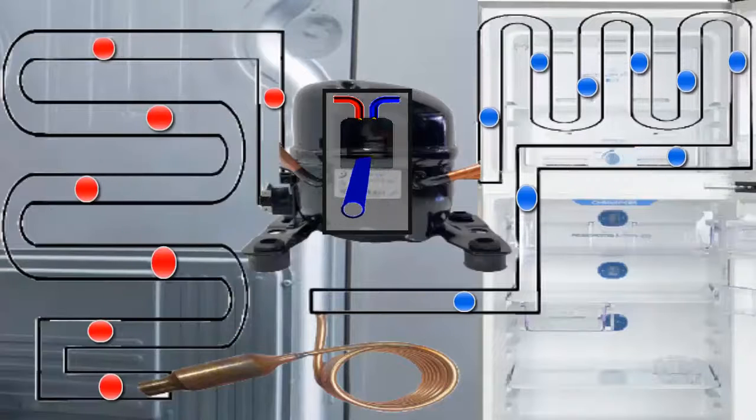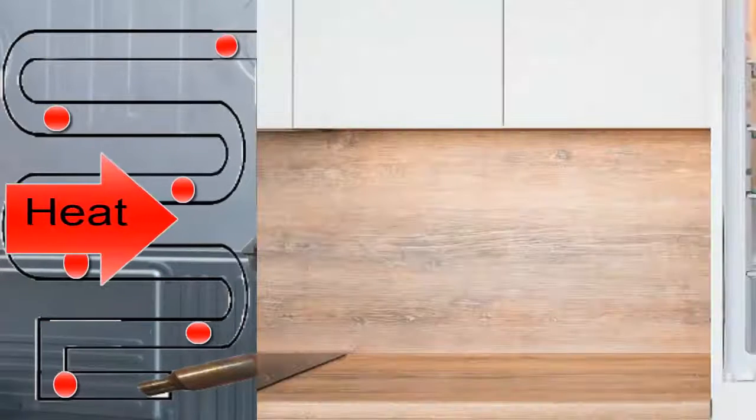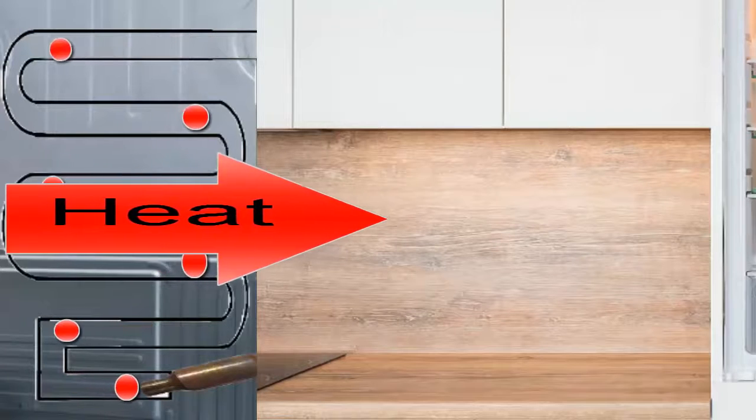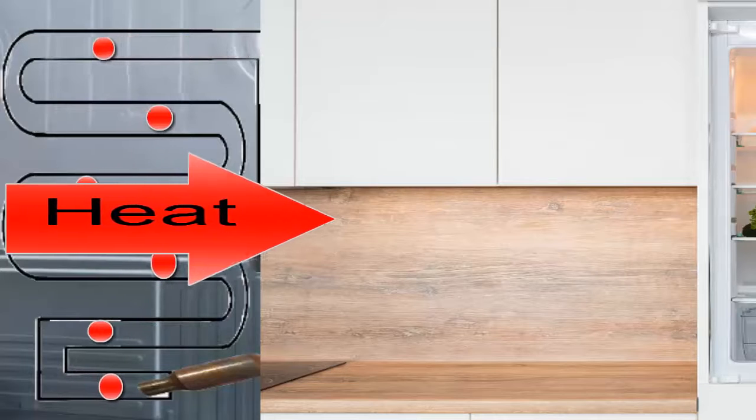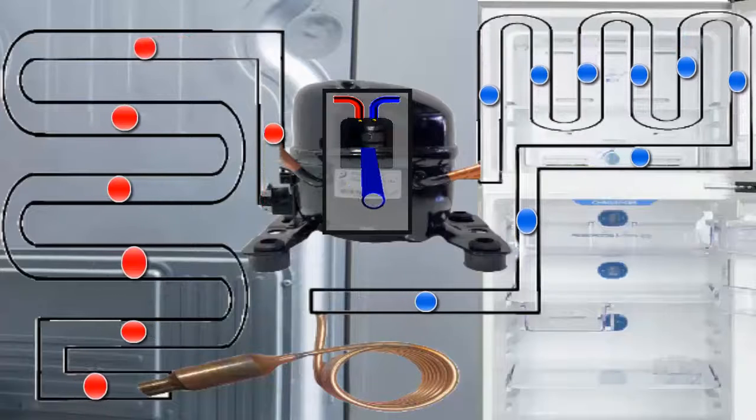In the condenser, the refrigerant must lose the heat absorbed from the food and the energy absorbed in the compressor. This heat must be expelled in the condenser into the environment. This heat dissipation process is favored by the high pressure that the R134A refrigerant gained in the compressor.